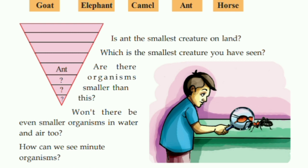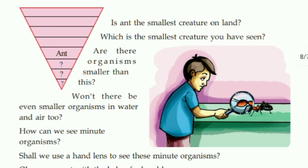There are many creatures smaller than an ant which we are able to see. We are able to see animals like bacteria and virus. When we were in COVID-19, that virus — we are not able to see it without a microscope. We need a microscope to see it.